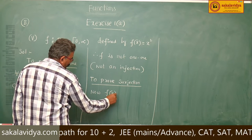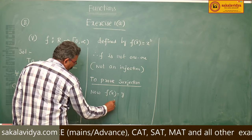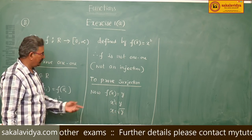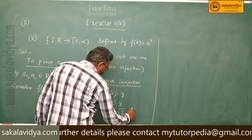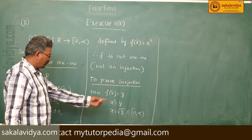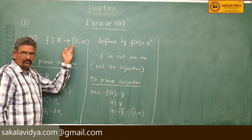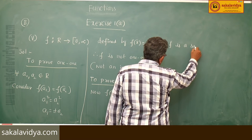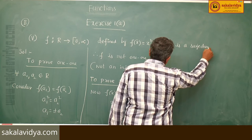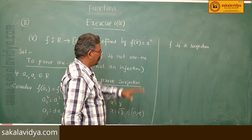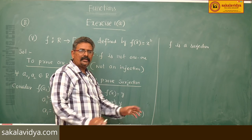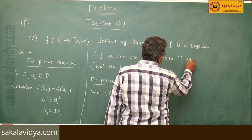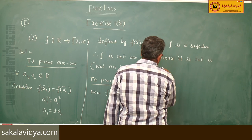For surjection: f(x) = y means x² = y, so x = √y. Since √y cannot be negative, √y belongs to [0, ∞), which equals the codomain. So the range equals the codomain. Therefore f is a surjection. Since f is not 1-to-1 but is a surjection, it is not a bijection. Hence, f is not a bijection.